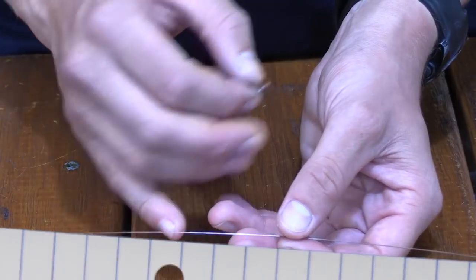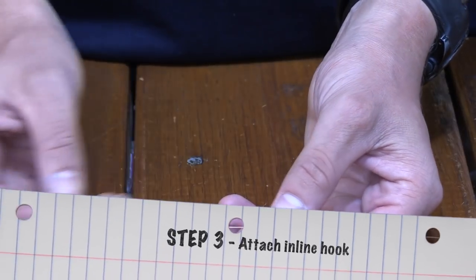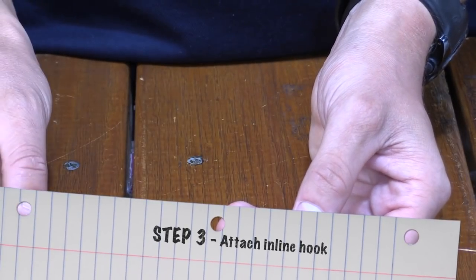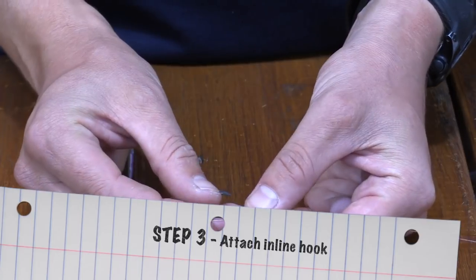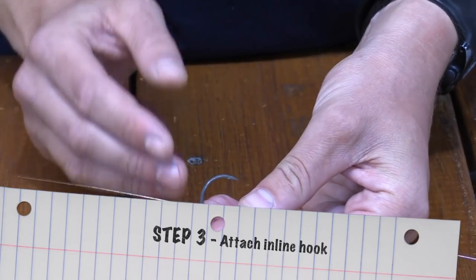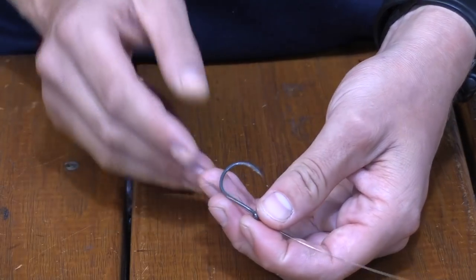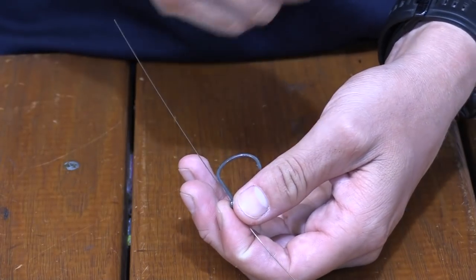Once you've completed your swivel, you then want the rest of the main line feed on your inline single using an inline single so that when your bait is trolling through the water column everything's kept nice and straight and your bait doesn't twist.